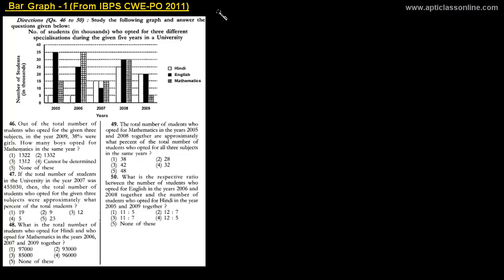Question number 46 reads: Out of the total number of students who opted for the given three subjects in the year 2009, 38 percent were girls. How many boys opted for Mathematics in the same year? This means that in 2009, out of the total students in Hindi, English, and Mathematics, 38 percent were girls — which means 100 minus 38, that is 62 percent, are boys out of the total.